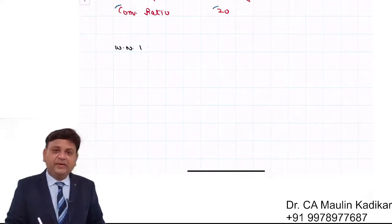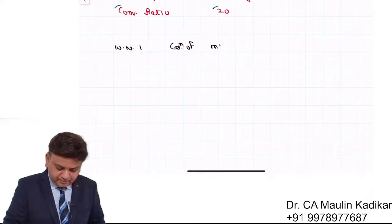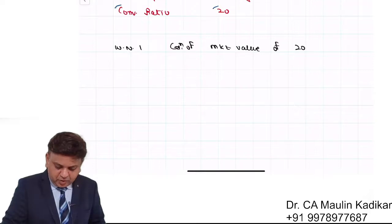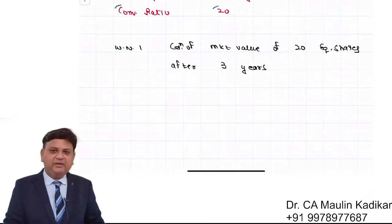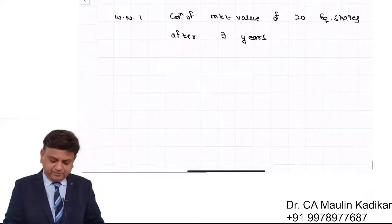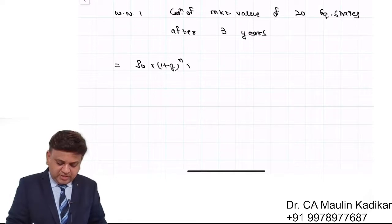Let me explain. First of all, I am making Working Note Number 1. We understand the formula: P0 × (1 + g)^N × number of shares. This will give us the market value of 20 equity shares after 3 years.